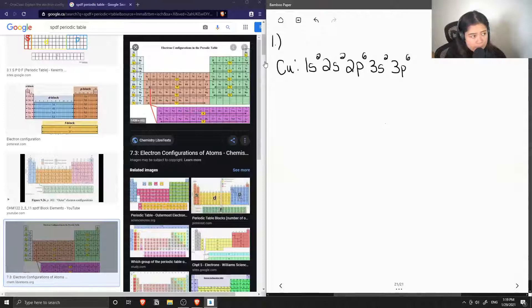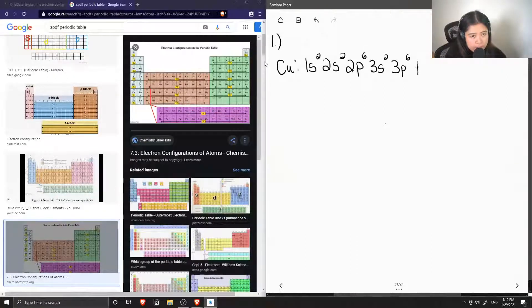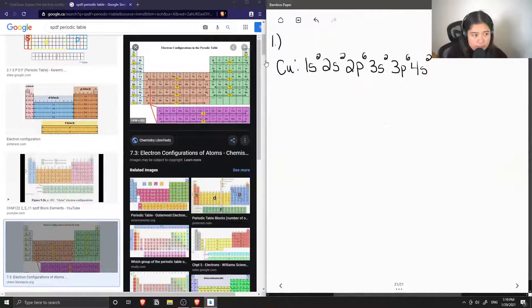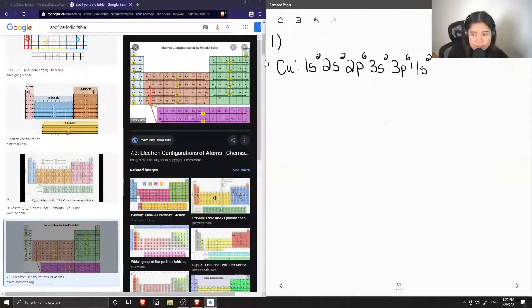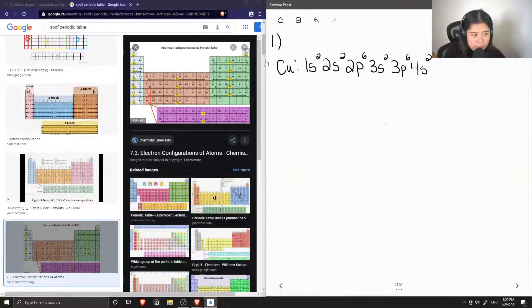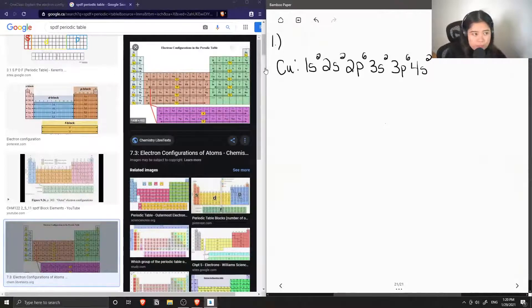And then we move over to the next row, which is 4S2. Then finally, when we get to the D block, you'll notice that we write the row number minus 1. Similarly, when we get to the F block, we write the row number minus 2. So when we get to the D block, we write 3, and then D.